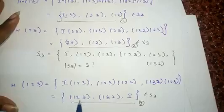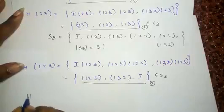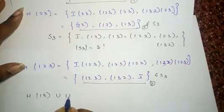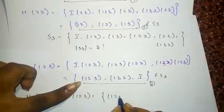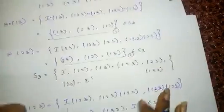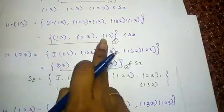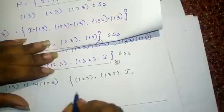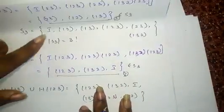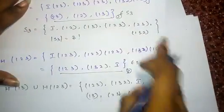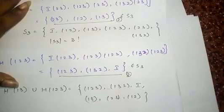If we write the union of all elements: H(1 3) ∪ H(1 2 3) equals {(1 2 3), (1 3 2), I, (1 3), (2 3), (1 2)}. Comparing this with S3, all 6 permutations are the same, so H(1 3) ∪ H(1 2 3) is equal to S3.